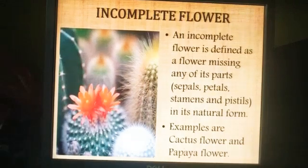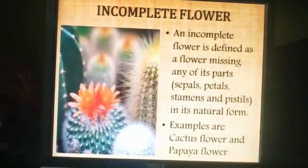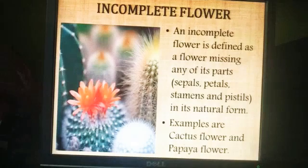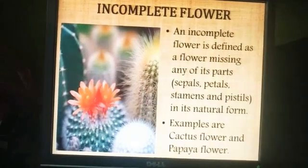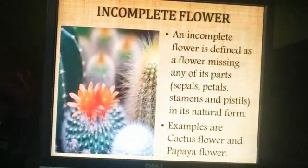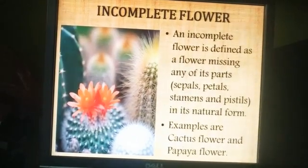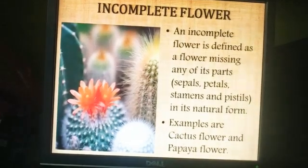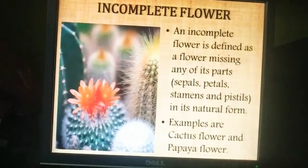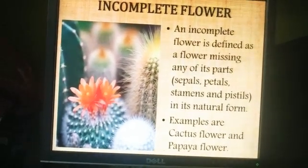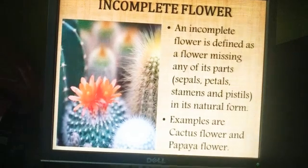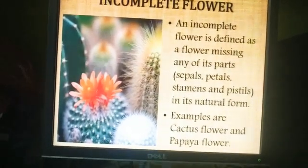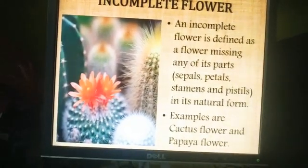Next is the incomplete flower. An incomplete flower is defined as a flower missing any of its parts in its natural form — that is, sepals, petals, stamens, or pistils. Examples of incomplete flowers are the cactus flower and the papaya flower.